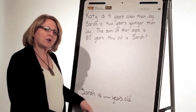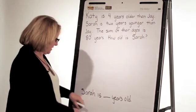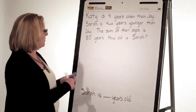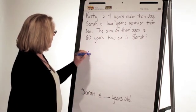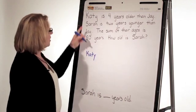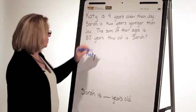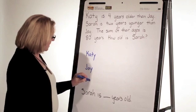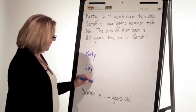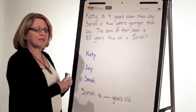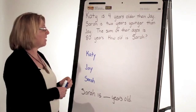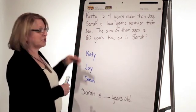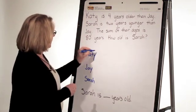Now I want to think about who am I talking about in this problem. In this problem, I'm talking about Katie, I'm talking about Jay, and I'm talking about Sarah. I like to do the names in the order they appear in the problem — Katie, Sarah, and Jay's what? Their ages.